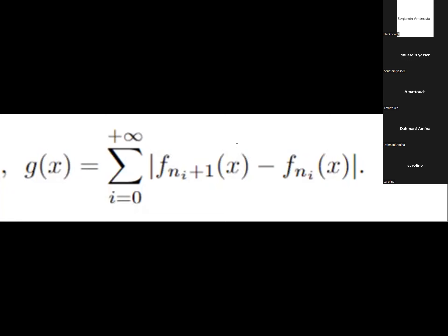So it says that you obtain that in fact f_{n_i} converges for almost x in omega, almost everywhere in omega.